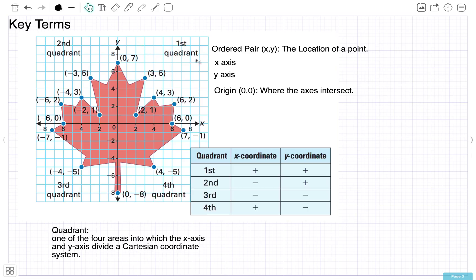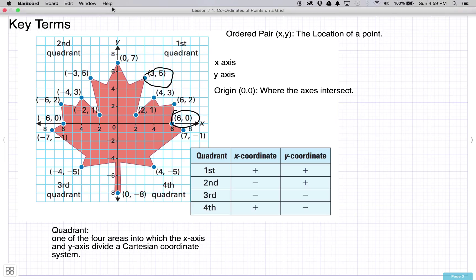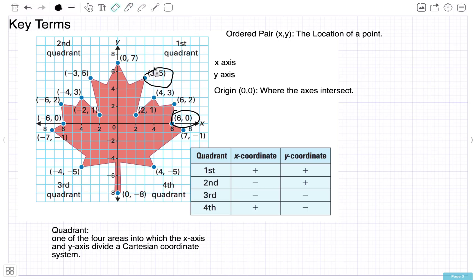Here's the key terms I want you to know. Ordered pair. This is an ordered pair. Here's an ordered pair right here. There's an ordered pair. Let's take a look at this ordered pair over here. First, it's x, then y. First x, then y.